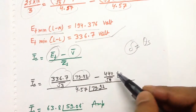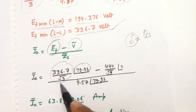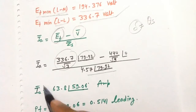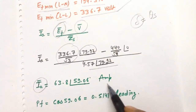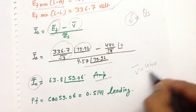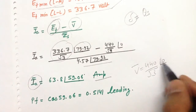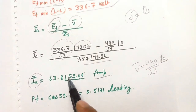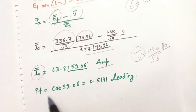The line-to-neutral terminal voltage is 440/√3 ∠0°. The terminal voltage is the reference voltage, which is why it is written at angle 0. Calculating Ia using these values, we get Ia = 63.8∠59.06° ampere. The phase difference between the terminal voltage and the armature current gives us the power factor.